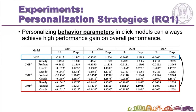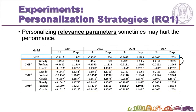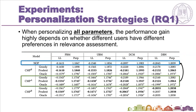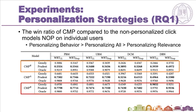The first research question is: which parameters should be personalized in click models? From the experiment results, we find that personalizing behavior parameters in click models can always achieve high performance gain on overall performance. Meanwhile, personalizing relevance parameters sometimes may hurt the performance. When personalizing all parameters, the performance gain highly depends on whether different users have different preferences in relevance assessment. In conclusion, behavior-related hypotheses are more suitable for personalization than relevance-related hypotheses in click models.